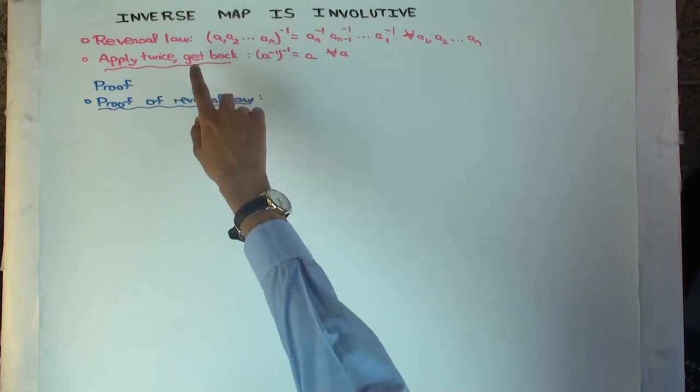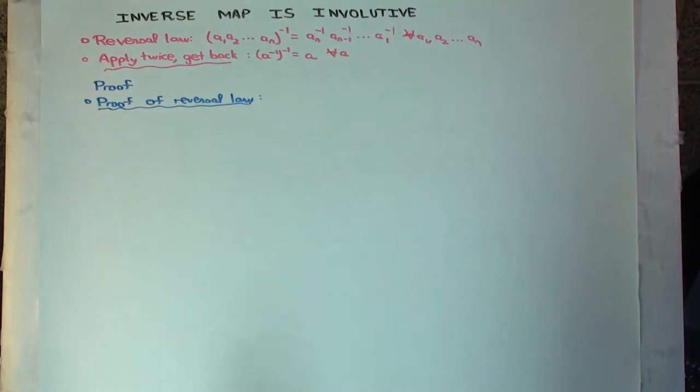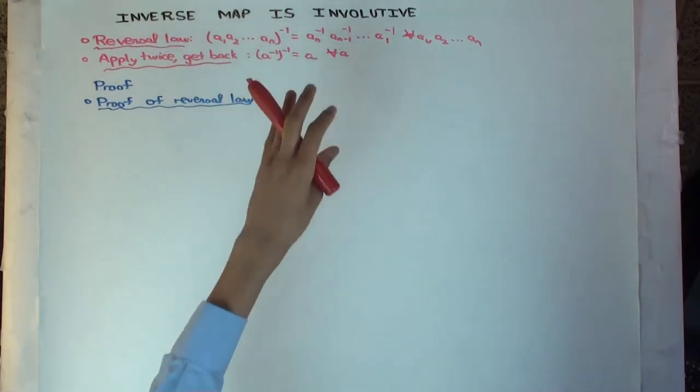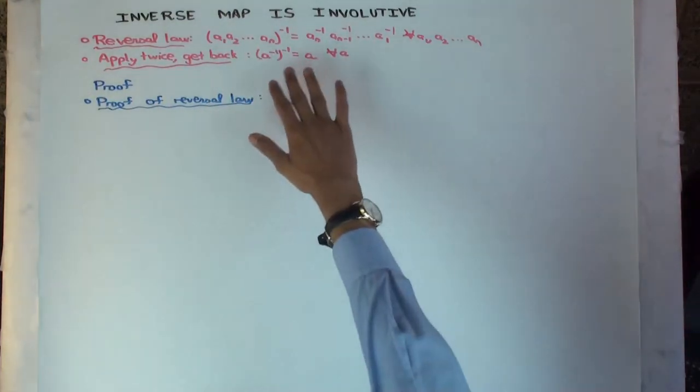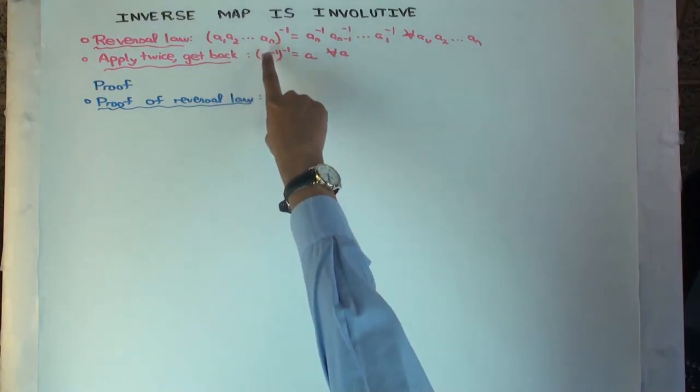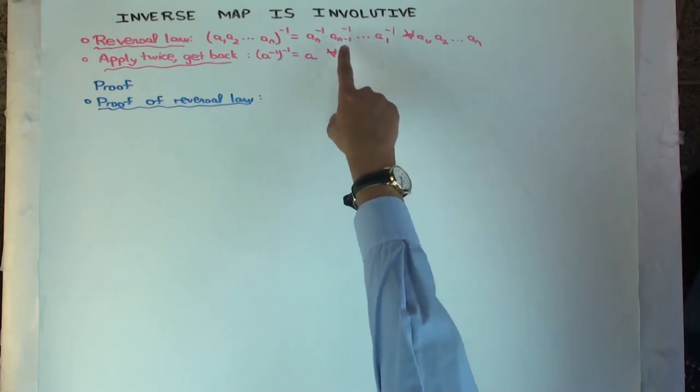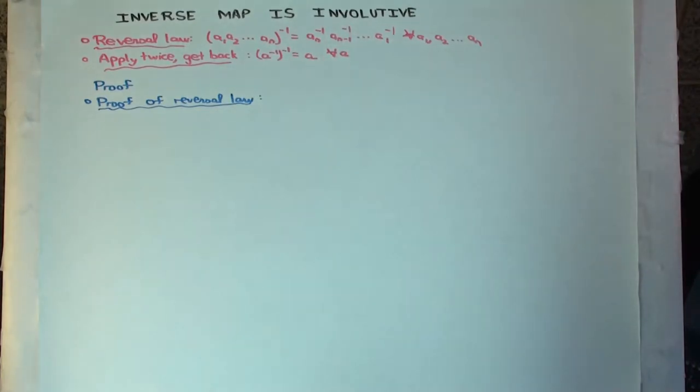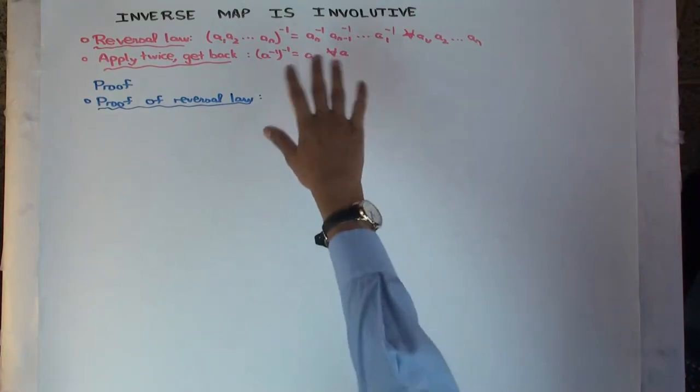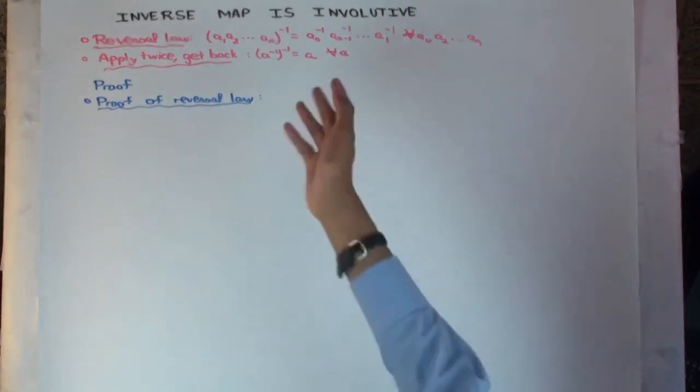So the first law says it's a reversal law. Both of these together are sometimes used to say the inverse map is involutive, though that's sometimes just used for the second one, but actually both of them together say it's involutive. The reversal law says the inverse of a product is the product of the inverses in reverse order. What would the version of this with just product of two things say? That would just say AB inverse is B inverse A inverse, right? But we are just doing n things directly.